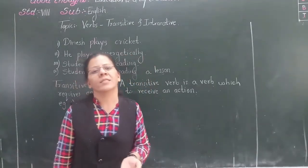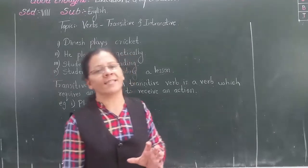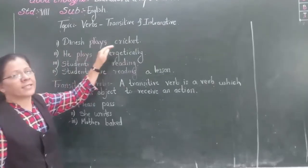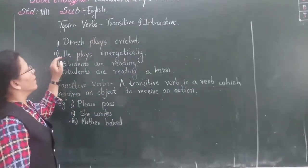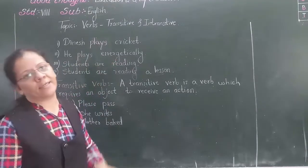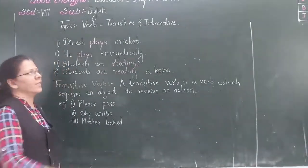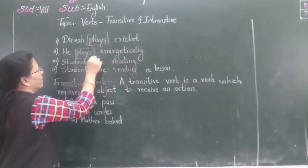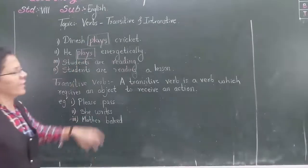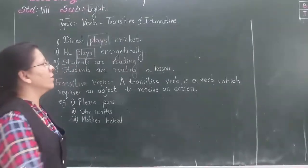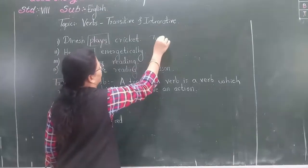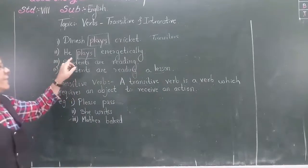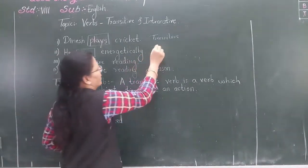So before explaining the concept of transitive and intransitive, let us see two examples. Dinesh plays cricket. He plays energetically. Now in these two sentences, which are the verbs? Plays. But in the first sentence, 'Dinesh plays cricket', the verb is transitive. And in the second sentence, the verb plays is intransitive.